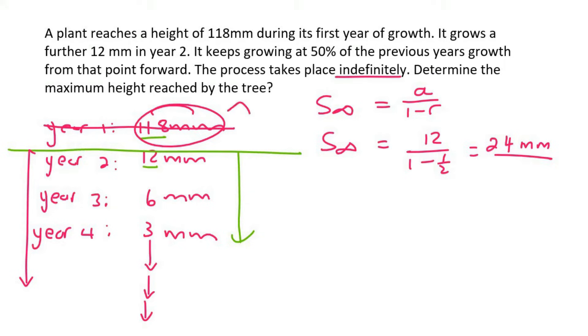But then we need to remember that in year one, it was already 118 millimeters. So the maximum will be 24 plus 118. And so it will reach a maximum height of 142 millimeters.